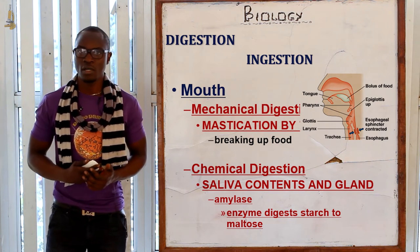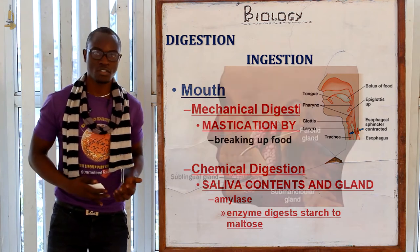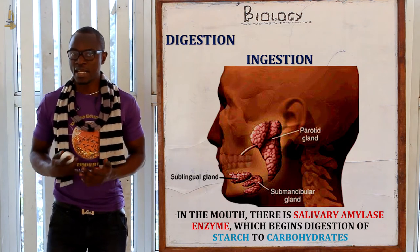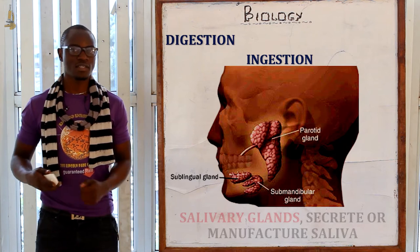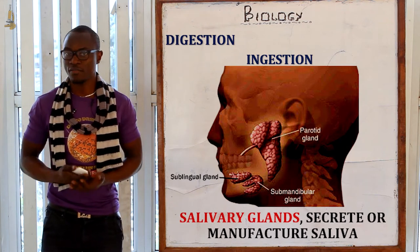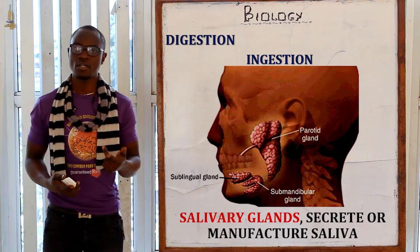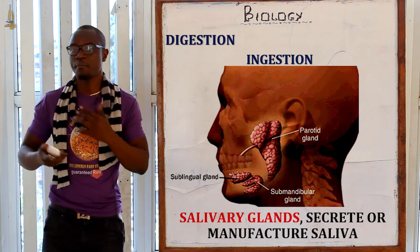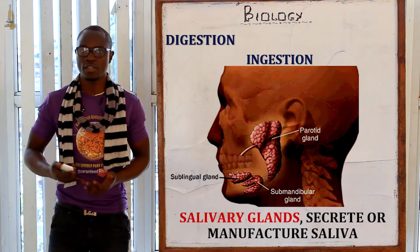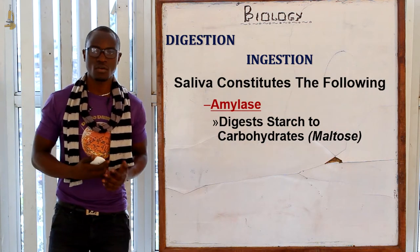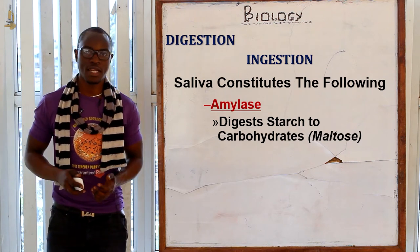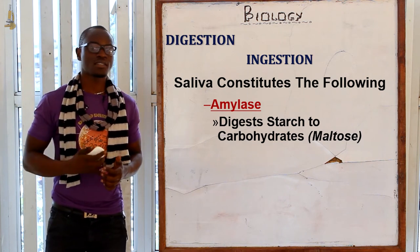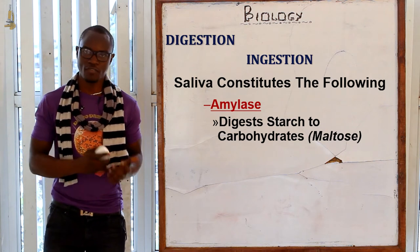After food has been broken down, chemical digestion immediately follows. Chemical digestion mainly involves saliva and the salivary glands. We have the parotid salivary gland, which is the largest, the mandibular salivary glands, and the sublingual salivary glands located below the tongue. The first constituent of saliva is amylase, whose function is to digest starch to maltose.